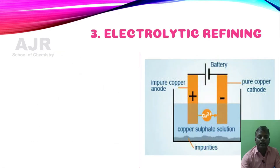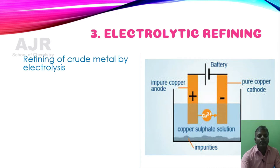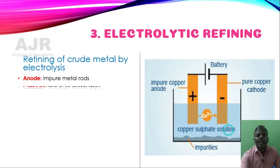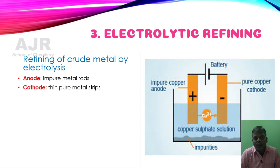Next, we are going to learn the electrolytic refining process — a general refining process carried out by the electrolytic method. The crude metal is refined by electrolysis, which is carried out in an electrolytic cell.